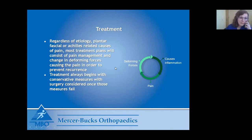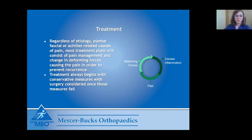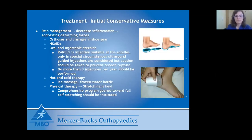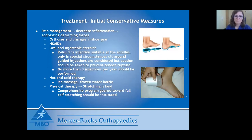Regardless of the etiology — whether the plantar fascia, calf muscle, or Achilles tendon — treatment should always be geared toward conservative measures first. For most heel pain disorders, I would say upward of 90% of patients get better with conservative measures. Decreasing pain and inflammation is the starting point. Once pain improves, you can address the deforming forces, which in these disorders tend to be some sort of tightness or tendon imbalance.